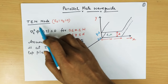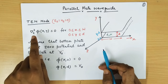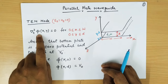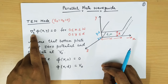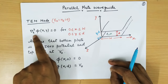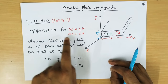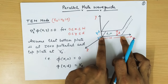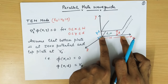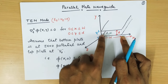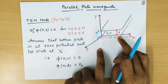As we know that for TEM mode, our Helmholtz equation converts into the potential form and in potential form it is given as del_T squared phi(x,y) equal to 0. This equation is valid for x from 0 to W, because W is the width of the waveguide, and y from 0 to D, as the separation between the waveguide plates is D.